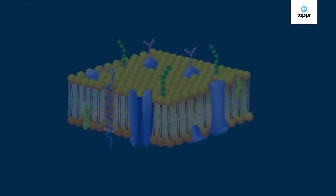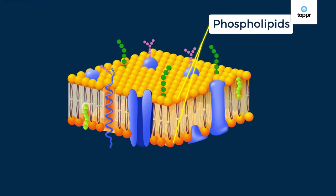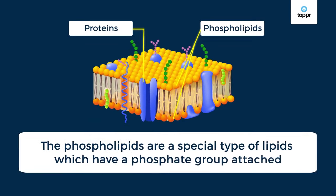To perform these particular functions, the cell membrane needs to have a particular composition. It is made of two layers of phospholipids with a few embedded proteins. These phospholipids, which are basically the building blocks of the cell membrane, are nothing but a special type of lipid which have a phosphate group attached to it.